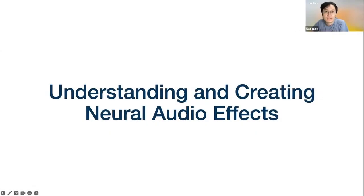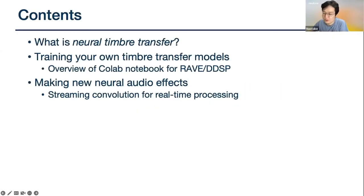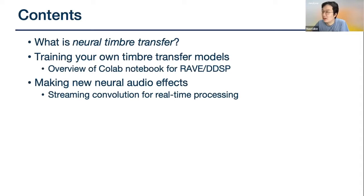I'll be first explaining what a timbre transfer effect is. RAVE and DDSP that's been mentioned before are both neural networks that perform timbre transfer. I would like to first explain what neural timbre transfer is, and then I'll go over the Colab notebook for RAVE and DDSP to give you an idea of how you can train your own timbre transfer models.